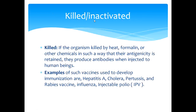Killed or inactivated vaccines: if the organism is killed by heat, formalin, or other chemicals in such a way that the antigenicity is retained, they produce antibodies when injected into human beings. Examples include whooping cough, hepatitis A, cholera, pertussis, rabies vaccine, influenza, and injectable polio vaccine.